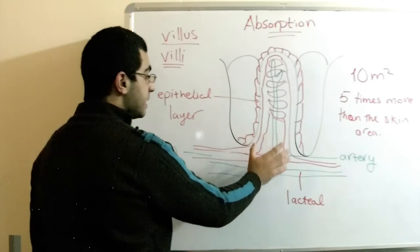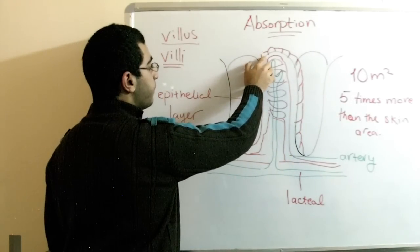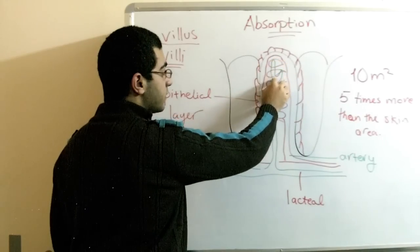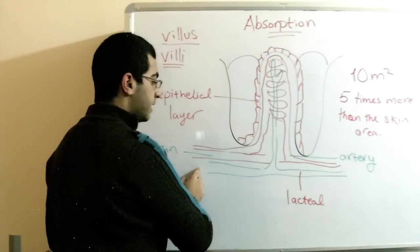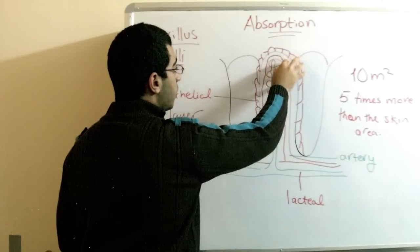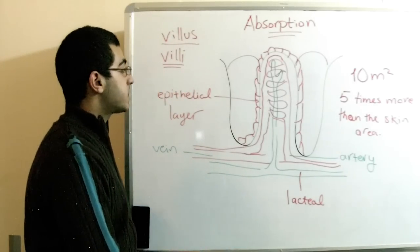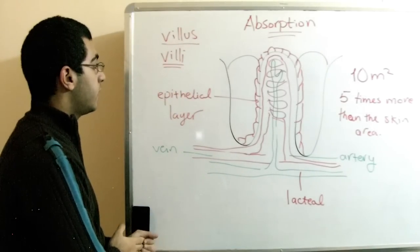And this is the villus, this is the site of exchange where the food enters. Some food moves through the lacteal and it has a certain path, and some other food moves through the blood vessels through another path that we will mention next time.